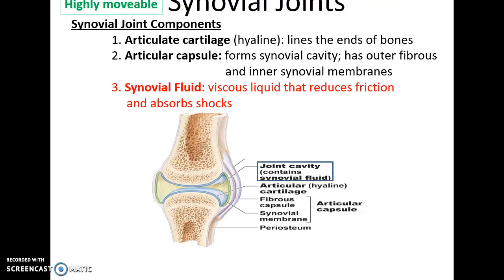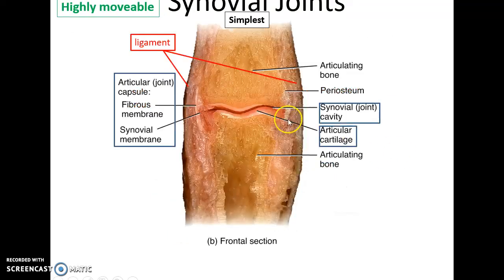The highly movable synovial joints need a few different structures. Besides the bones, you have the articular cartilage on the smooth ends of the bones that helps form the joint. You also have the articular capsule, which helps form the joint cavity. Within the joint cavity is the synovial fluid — viscous, helps to reduce friction in movement, and helps to absorb shocks. The articular capsule is made up of the fibrous membrane of dense, irregular connective tissue, and the synovial membrane that produces synovial fluid.